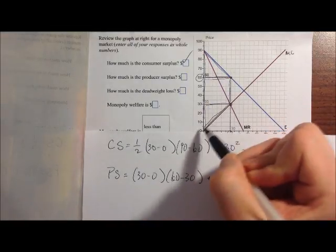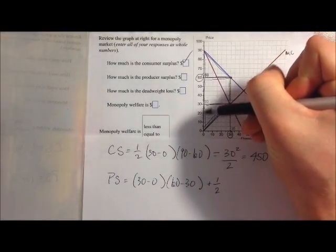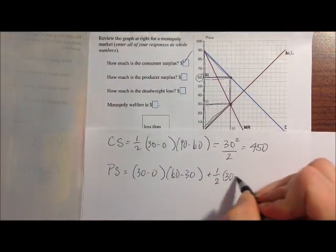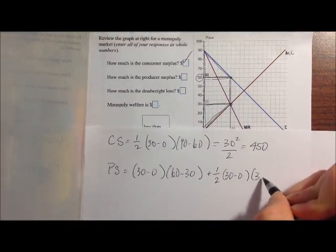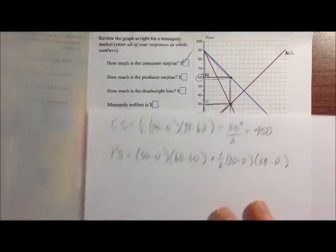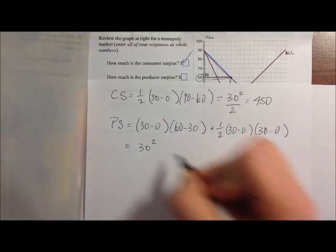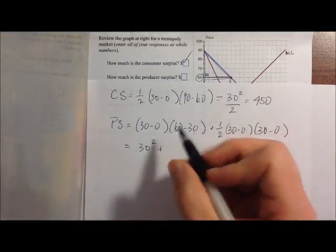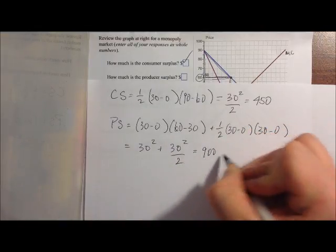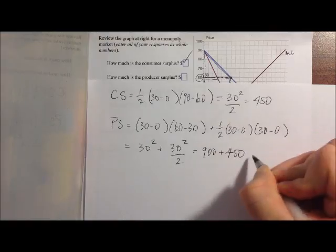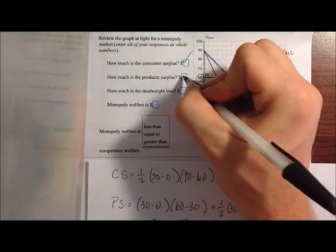And we add to that the area of this triangle down here. So we get 1/2. Our base is this right here, so 30 minus 0. And our height is this length right here, so again, 30 minus 0. And what we get is 30 times 30, so 30 squared, plus 1/2 of 30 times 30. So 30 squared over 2. So that's 900 plus 450, which is 1350. So that's our producer surplus.